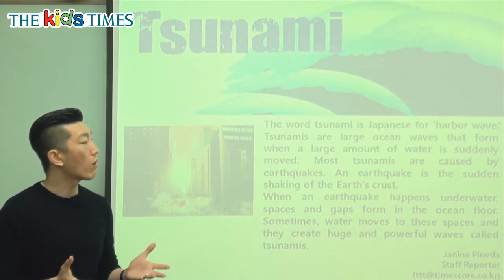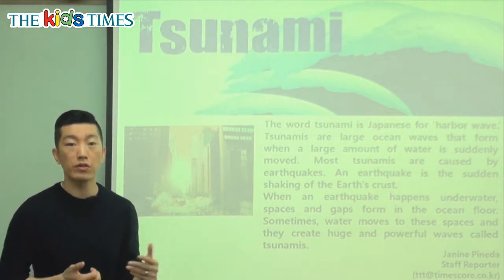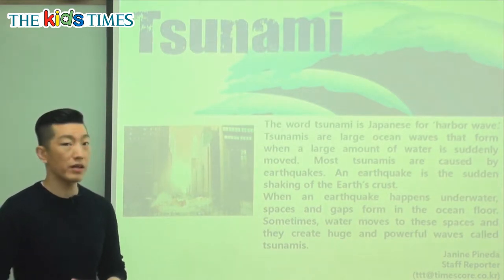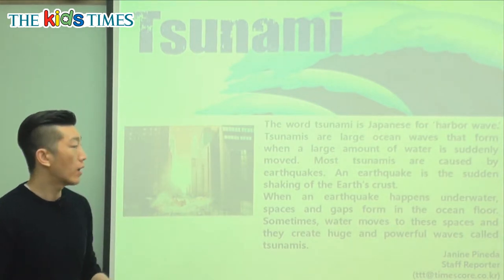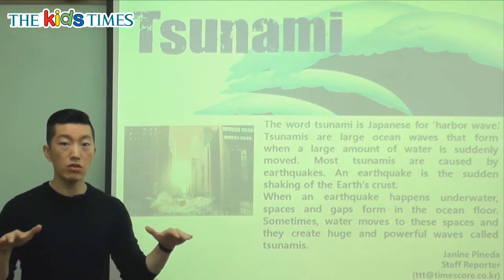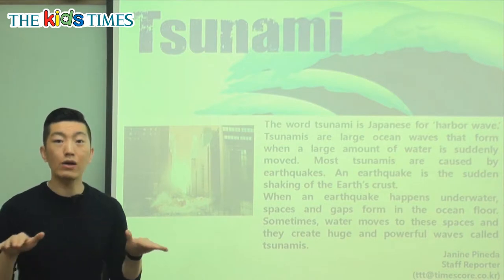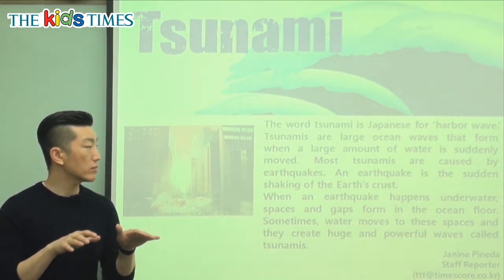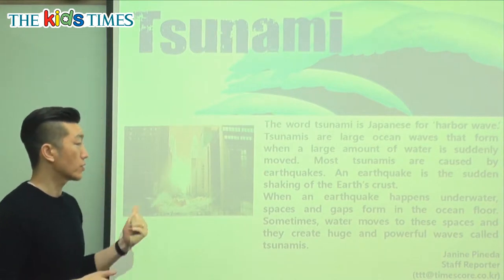When a large amount of water is suddenly moved — like through an earthquake or something happening underwater — that's when all this water starts moving around and gets very dangerous. Most tsunamis are caused by earthquakes. Usually after an earthquake, there's always a tsunami warning. An earthquake is the sudden shaking of the earth's crust. The earth has different layers, and the crust is the outermost one. When the earth shakes and the earthquake is caused inside, that's when the water starts moving around — and that's usually the cause of tsunamis.